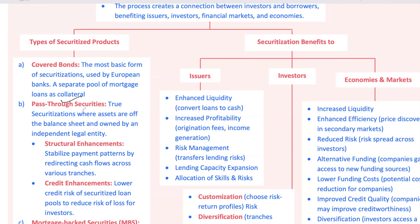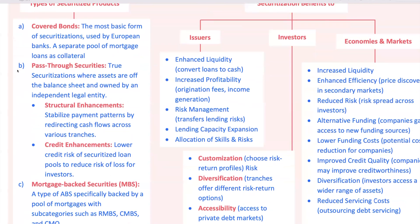Next, we have pass-through securities, which are the classic example of securitization. In pass-through structures, the assets are completely removed from the lender's balance sheet and are instead owned by an independent legal entity. This entity issues securities backed by the asset pool, and investors receive principal and interest payments directly passed through from the pool. Pass-through structures often include structural enhancements to stabilize payment patterns, reducing the impact of defaults or prepayments on cash flows. These enhancements allow cash flows to be redirected across various tranches, with senior tranches receiving payments first, followed by mezzanine and equity tranches in order, enabling investors to choose their exposure based on their risk tolerance.